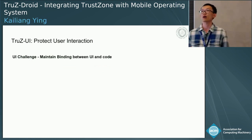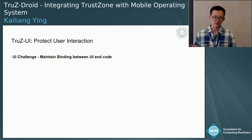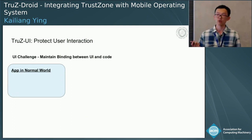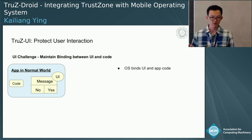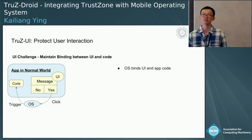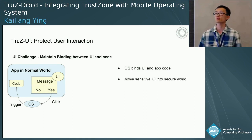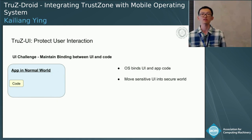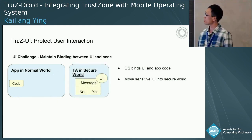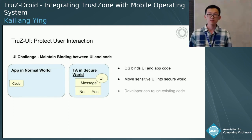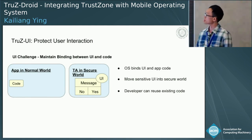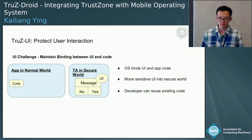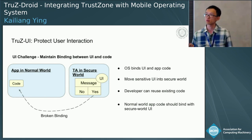The challenge for UI interaction can be summarized in one sentence: how can we maintain a binding between the UI and the code? Normally, when apps write UI they include UI elements and corresponding code, and the OS provides a binding between them so that when the UI is clicked the corresponding code is invoked. However, because of the nature of TrustZone, to protect the UI you have to move the UI interaction into the secure world — meaning this UI runs in a different OS. Since our design constraint requires apps to reuse existing OS interfaces, the code remains in the normal world and needs to maintain a binding across two different OSes, which causes a broken binding.